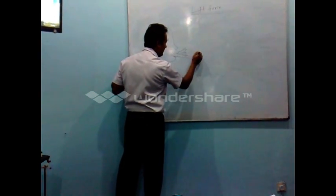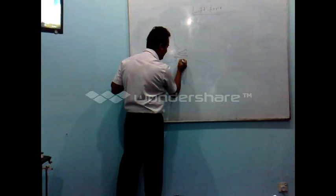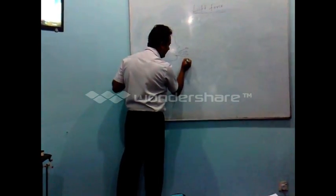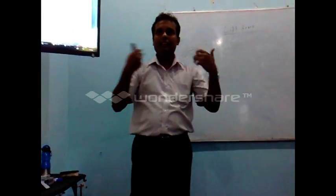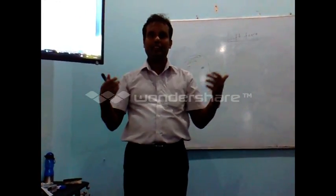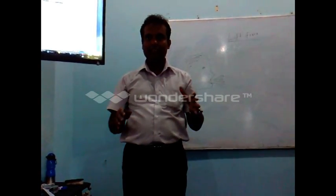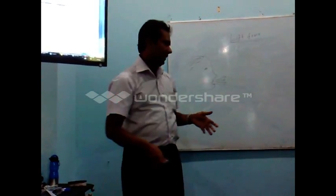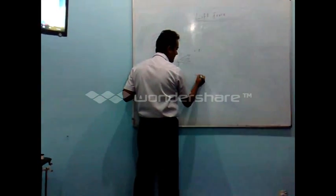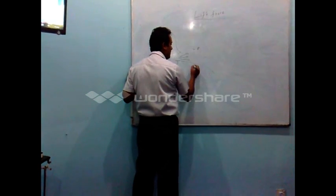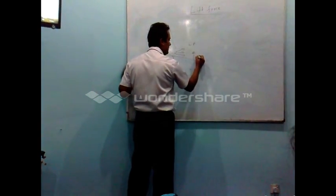Here you get fast moving air, and here you get slower air on the side. When you have fast moving air, air molecules are further apart. When air molecules get further apart, the pressure drops — it creates a low pressure region. So here we get low pressure, and here we get high pressure. There will always be a force from high pressure toward low pressure.